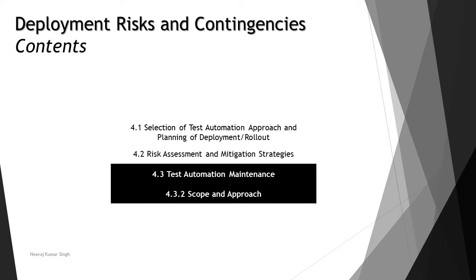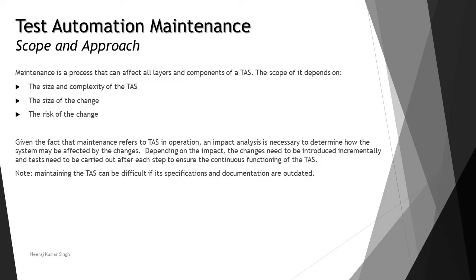Here we are talking about test automation maintenance and also looking at what can be the scopes and different approaches which can be applied as a part of maintaining the same. The first thing to understand is what kind of layers, responsibilities, and components are involved as a part of maintenance as a process, which can affect all different layers and components.